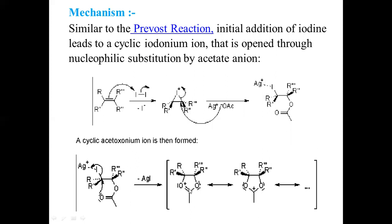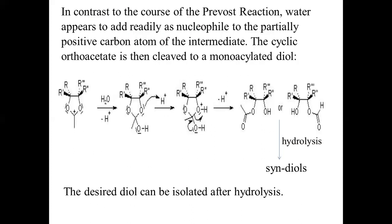This cyclic acetoxonium ion intermediate is stabilized by delocalization, and the positive charge is delocalized on oxygen, carbon, and oxygen of the cyclic acetoxonium ion. Now, since this reaction is performed in the presence of water, water acts as a competitive nucleophile and attacks onto the positively charged carbon of the acetoxonium ion intermediate. In contrast to the previous Prévost reaction, here water acts as the competitive nucleophile and attacks onto the carbon, forming a cyclic orthoacetate intermediate which then undergoes cleavage.